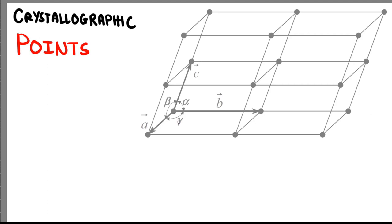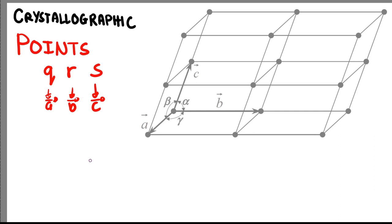Let's start with our crystallographic points. To define a specific position in our unit cell, we denote it using our Q, R, S indices, where Q, R, and S are the relative distances along the A, B, and C directions from a specified origin. Q is along A, R is along the B direction, and S is along the C direction. For example, at the origin, since we haven't translated along A, B, or C, Q, R, S will be 0, 0, 0. When writing crystallographic points, we don't put commas, parentheses, or brackets — just the numbers: 0 0 0.